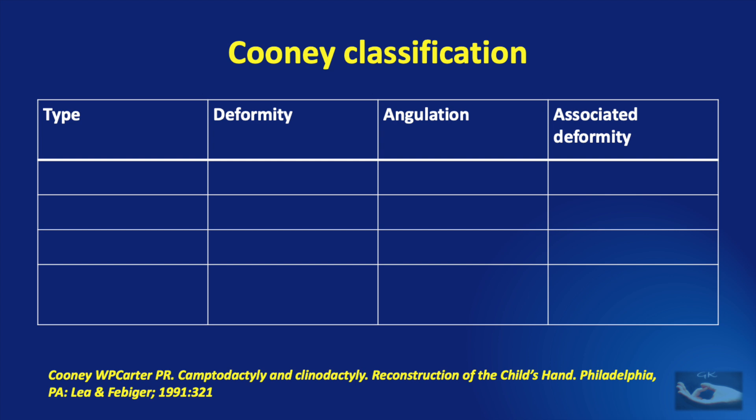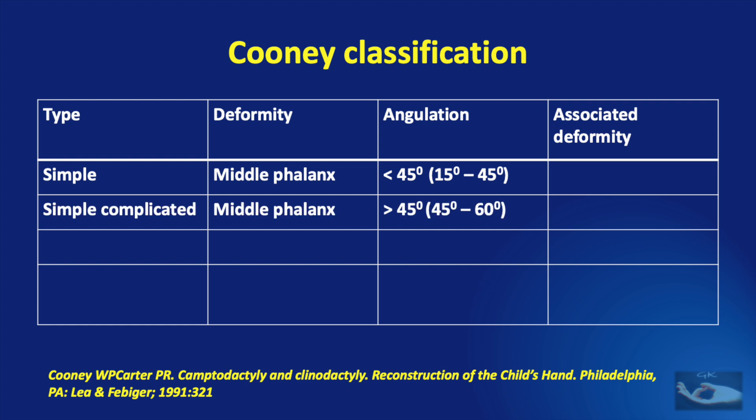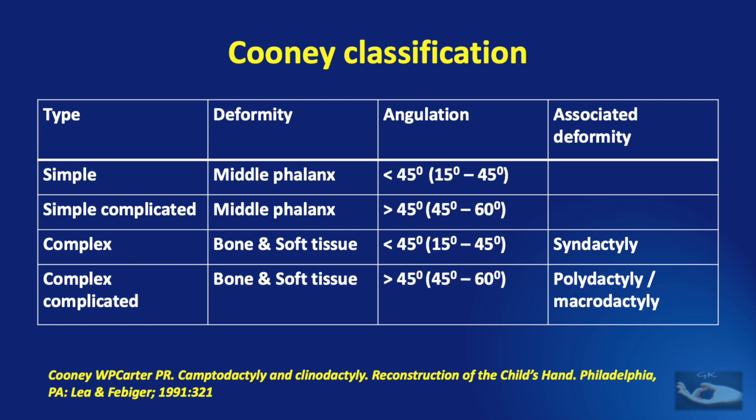The commonly used classification system for clinodactyly is the CUNY classification, proposed in 1991. Simple clinodactyly refers to deformity of the middle phalanx with angulation less than 45 degrees, not associated with any other deformity. Simple complicated clinodactyly refers to deformity of the middle phalanx with more than 45 degrees of angulation, again not associated with any other deformity. Complex clinodactyly refers to bone and soft tissue deformity with less than 45 degrees of angulation, which could be associated with syndactyly. Complex complicated clinodactyly refers to bone and soft tissue deformity with more than 45 degrees of angulation, possibly associated with polydactyly or macrodactyly.